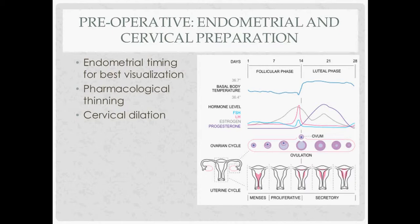You can use pharmacological thinning to prepare the uterus. To ensure the endometrial lining is thin, you can give progestins or put somebody on OCPs, which should help thin the endometrial lining. For cervical preparation, you might need to dilate the cervix before you can put the scope in. The main ways are misoprostol or using laminaria — as discussed in the dilation and curettage lecture.